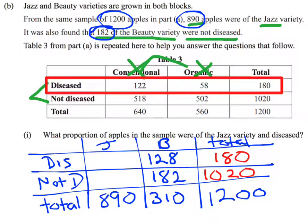Now that I have that information, I can complete the rest of my table. For the diseased apples, there's 180 in total. 128 of them are Beauty. Therefore, 180 minus 128 leaves me with 52 apples that are diseased and Jazz. To find the last one, I can do 890 minus 52, or 1,020 minus 182. They'll give me the same answer of 838.